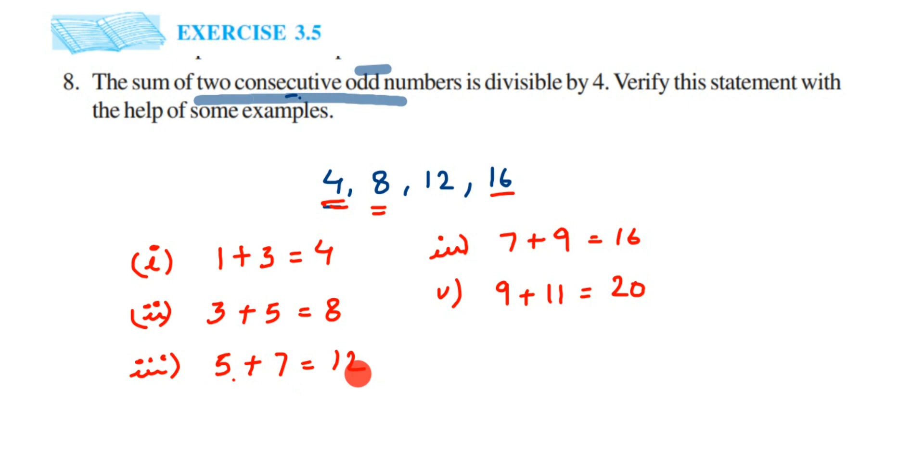You can see all these numbers: 4, 8, 12, 16, 20. Let me take another number. 11 plus 13 equals 24. So all the numbers which go in the 4 table can be written as the sum of two consecutive odd numbers, and these numbers are divisible by 4.